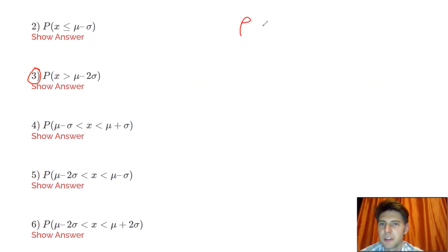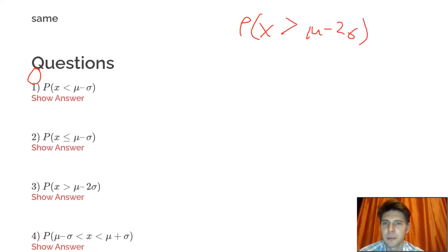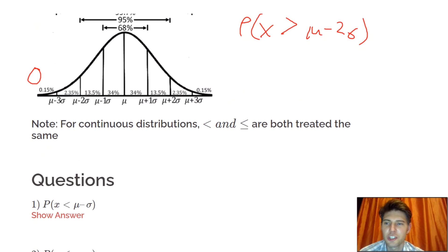Number three says the probability that x is greater than mu minus 2 sigma. So let's go back up to the notes. We're going to use this chart right here. Probability that x is greater than mu minus 2 sigma. First, let's find mu minus 2 sigma. Well, that's right here. Mu minus 2 sigma.